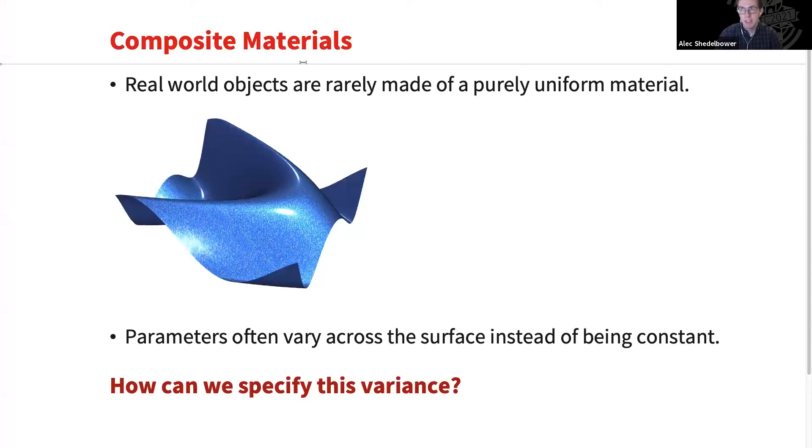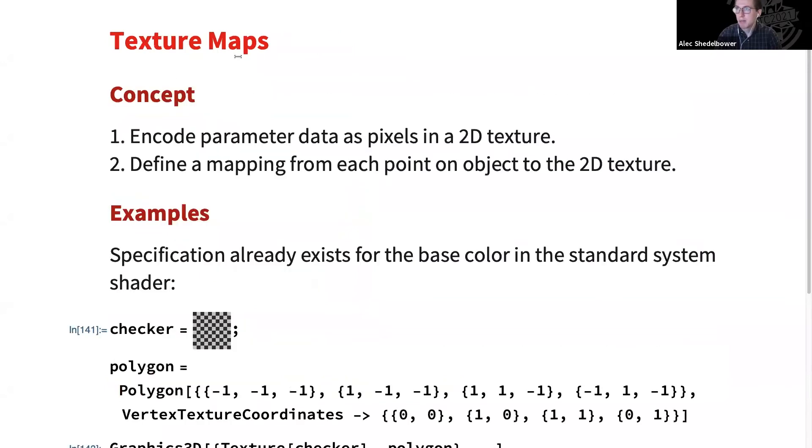So the issue we have here is that in the real world, objects are rarely made of a single kind of uniform material. We often have a sort of variance of those parameters we just saw over the entire surface. So the trick is how can we model those with our shader. For example, you can see here this speckled car paint. You can see its color and some of the shininess is changing constantly across the surface there. The answer to how we do this is texture maps.